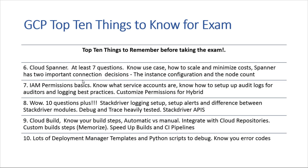Number six: Cloud Spanner. There were lots of questions on Cloud Spanner — at least six, seven, or even eight questions. The main areas to focus on are the use case, how to scale it, and how to minimize costs. Note that there are two important connection decisions you have to make: the configuration and the node count.